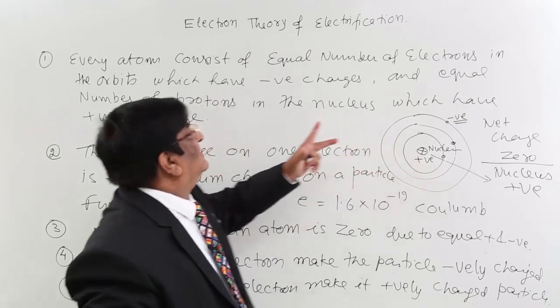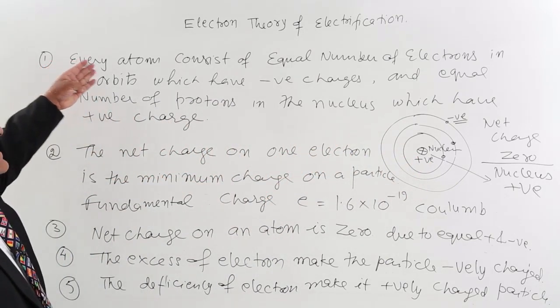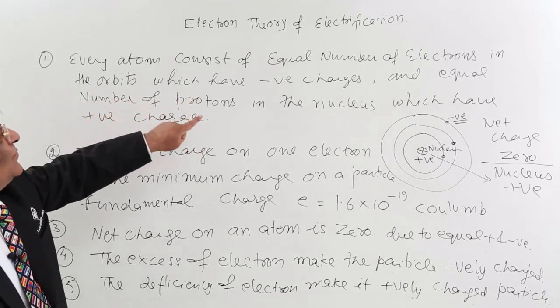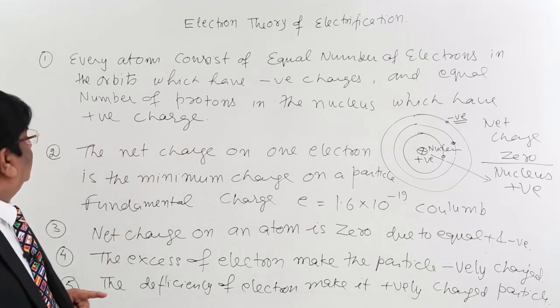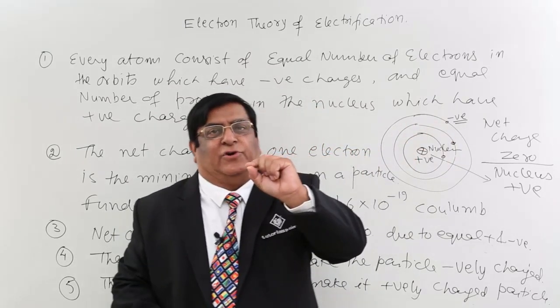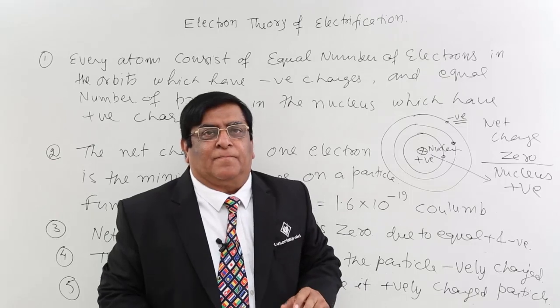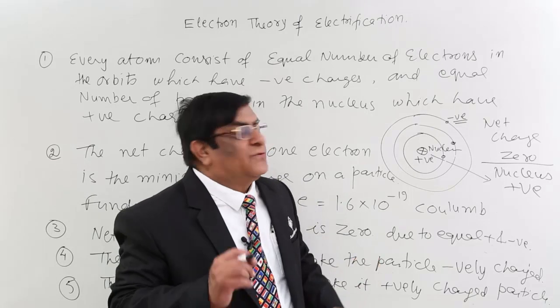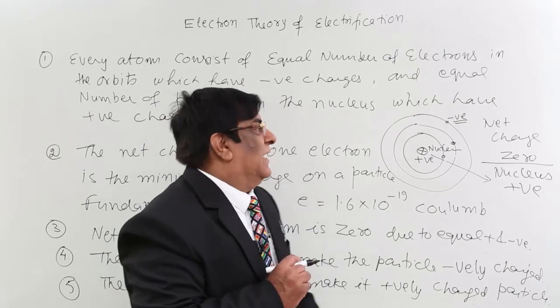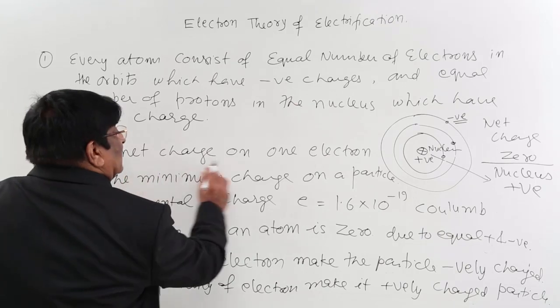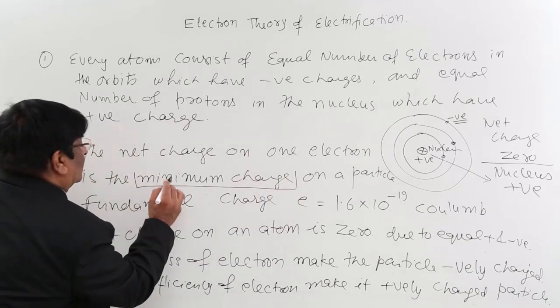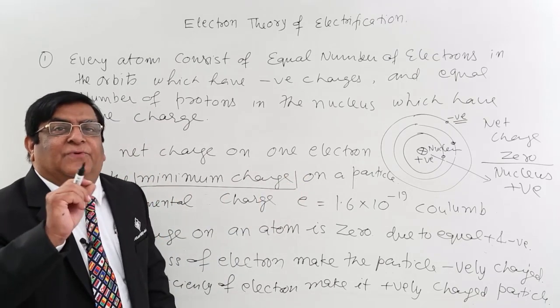Electrons are carrying negative and this is carrying positive. Every atom consists of equal number of electrons in the orbits which have negative charges and equal number of protons in the nucleus which have positive charges. Now we could not get any particle smaller than electron. This is smallest in diameter, smallest in mass and smallest in electric charge. So the net charge on one electron is the minimum charge and this makes answer of one of the very important question which is fundamental charge.